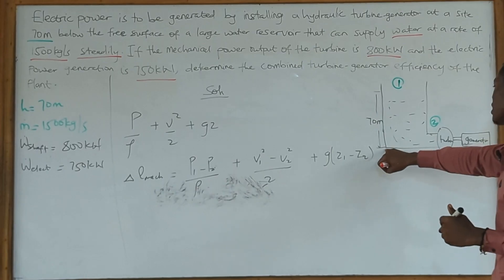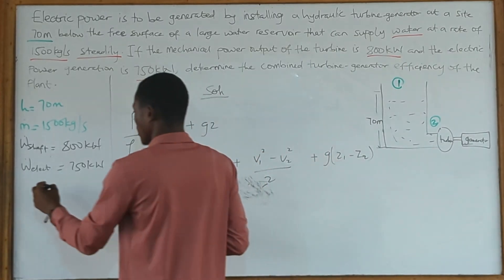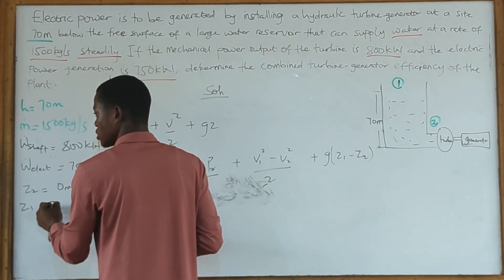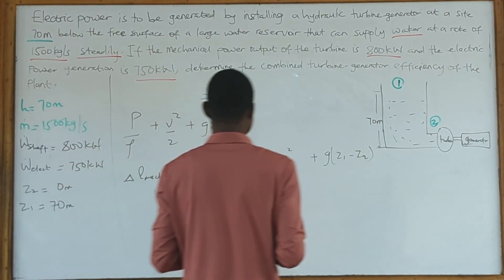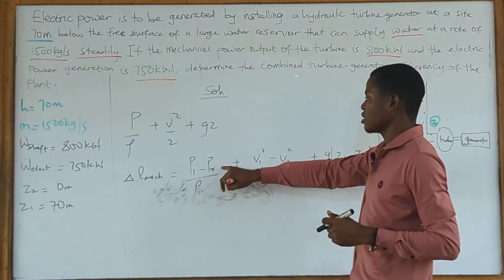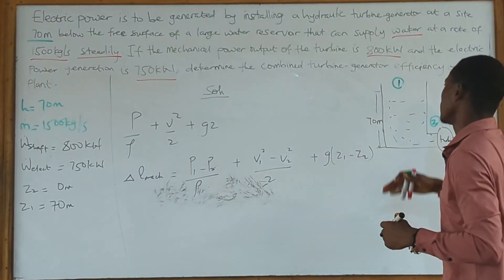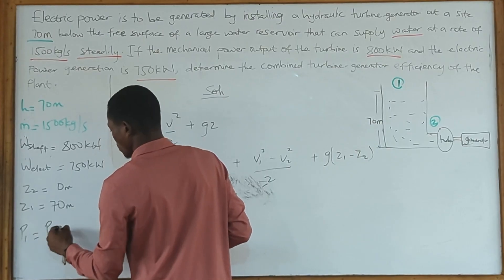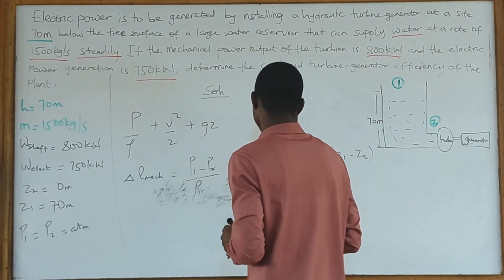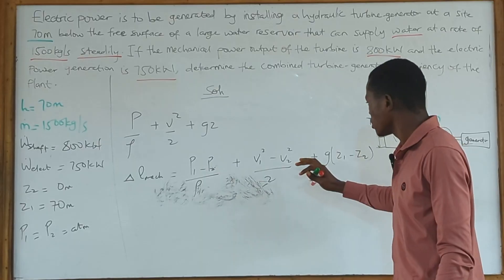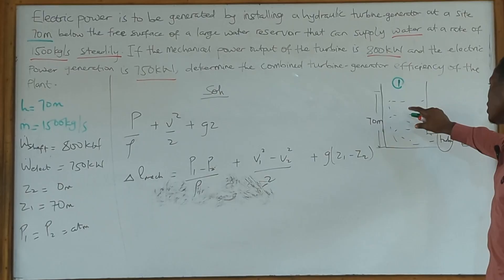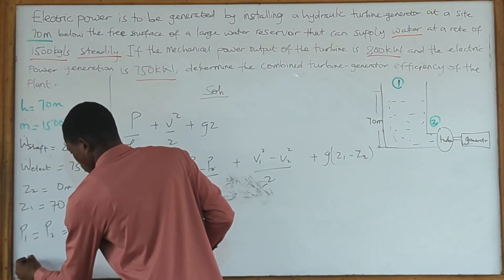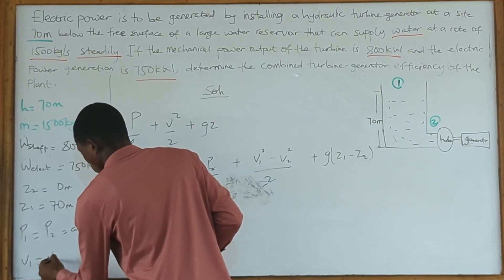We know z2 to be equal to zero meters because it's our reference, and we know z1 to be 70 meters. To find p1 and p2, we assume they are exposed to the atmosphere, so p1 equals p2 equals atmospheric pressure. For our velocities, we assume the water is stagnant or motionless, so v1 equals v2 equals zero.